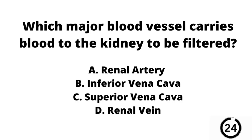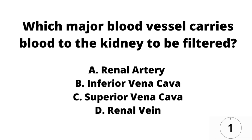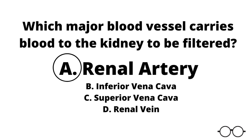Question number six. Which major blood vessel carries blood to the kidneys to be filtered? A the renal artery, B the inferior vena cava, C the superior vena cava, or D the renal vein? Our answer here is A — the renal artery brings blood to the kidneys so that it can be filtered.